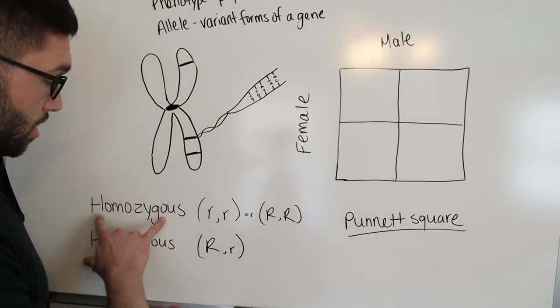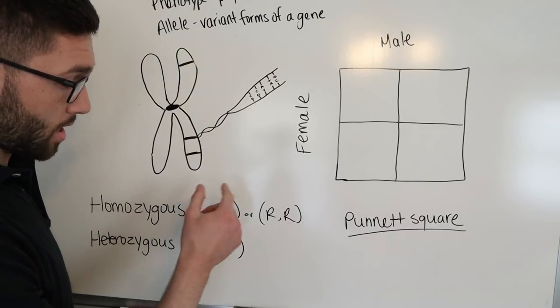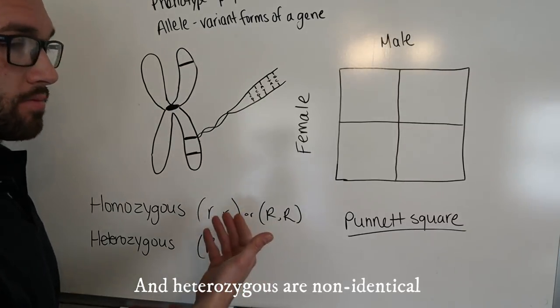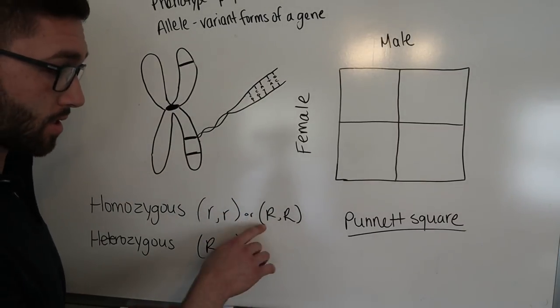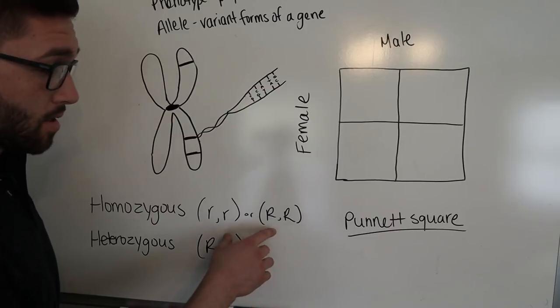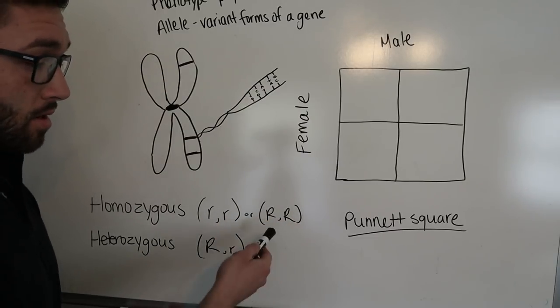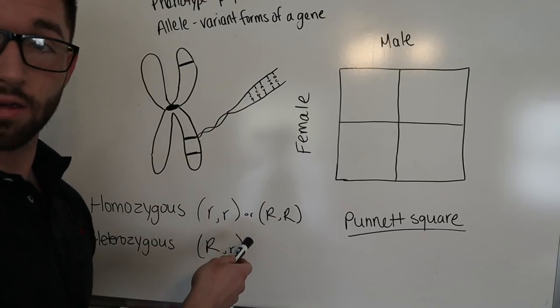Genes are said to contain two alleles that are either heterozygous or homozygous. And what that means is homozygous are identical alleles. So geneticists represent alleles as letters in uppercase or lowercase. So this would be uppercase R, uppercase R, and this would be said to be a homozygous gene.